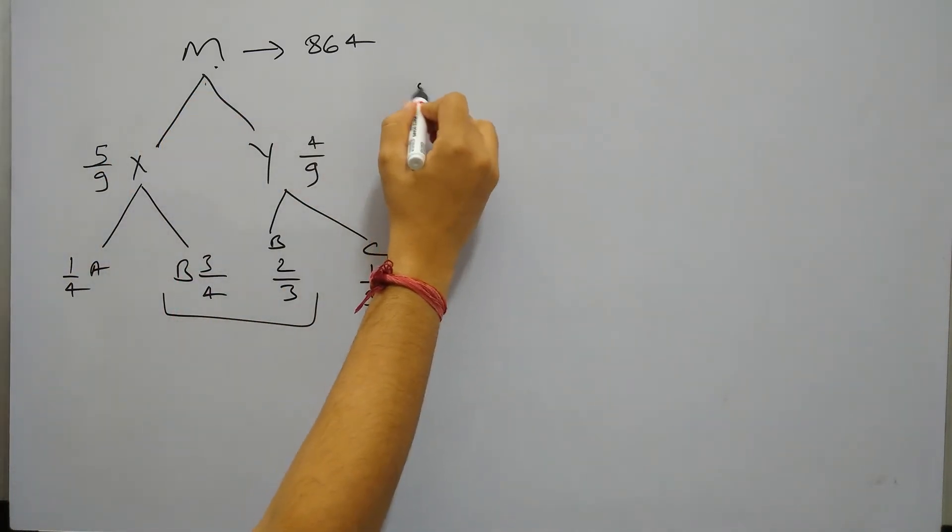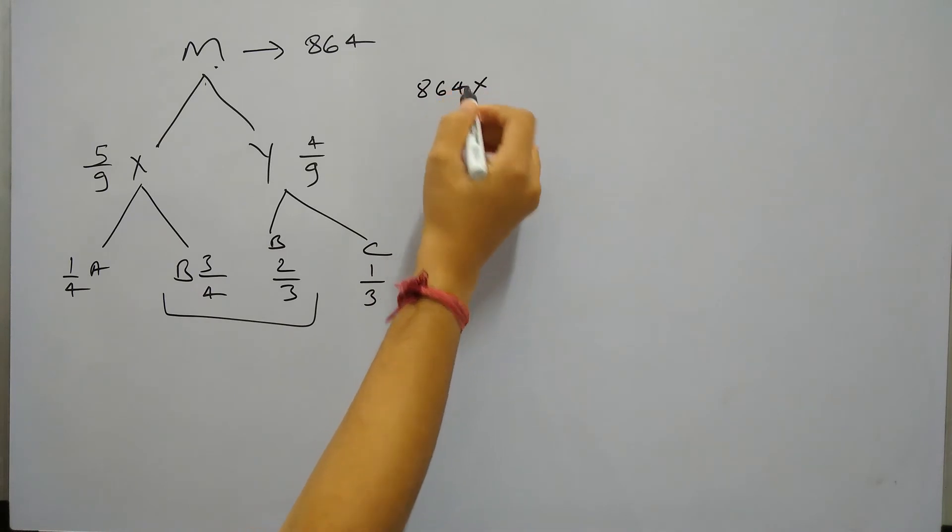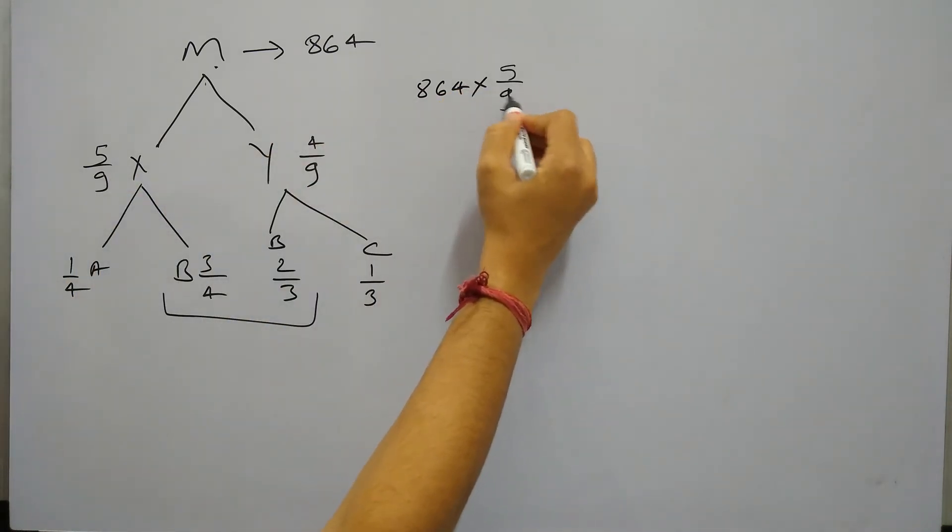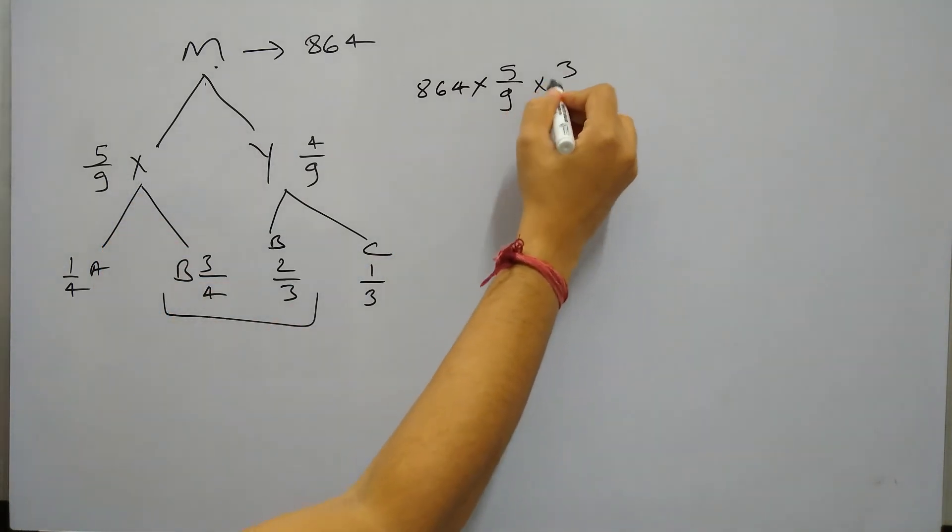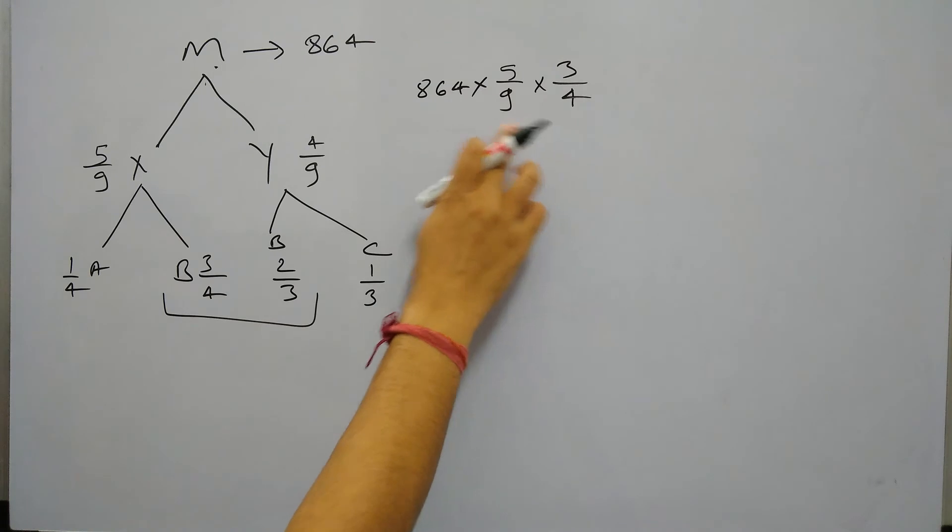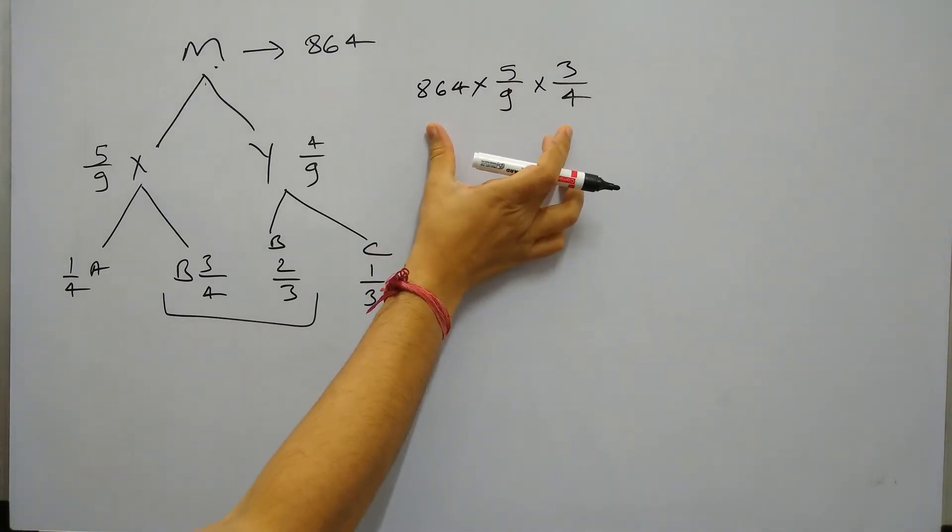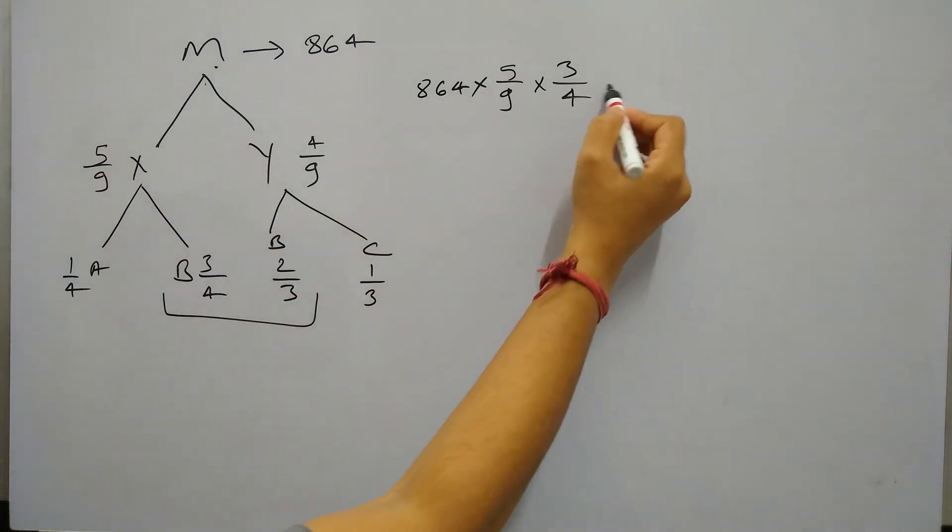So 864 into X is 5/9 of this. And further in X, 3/4 is B. So this is B, absolute value of B in X.